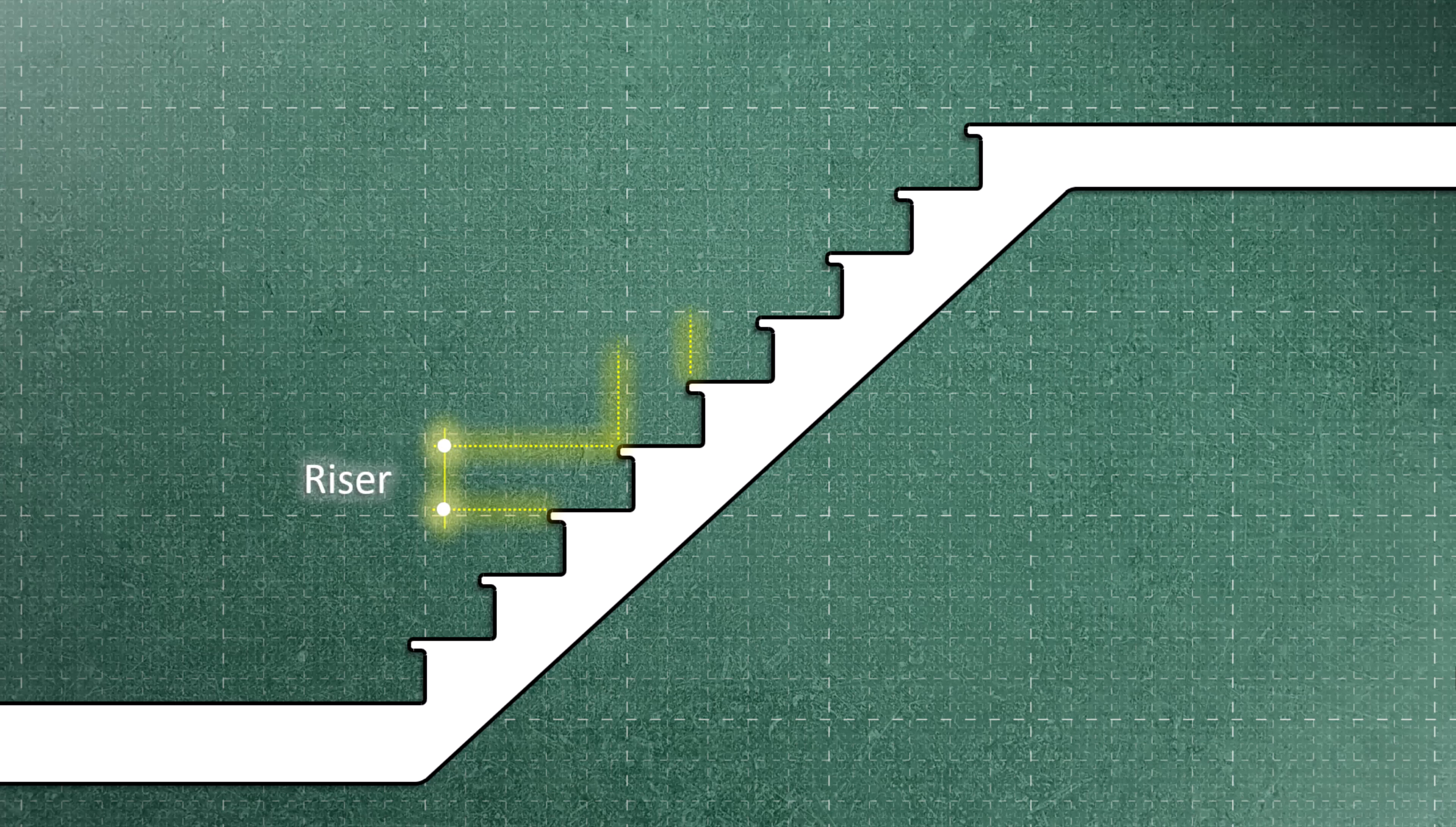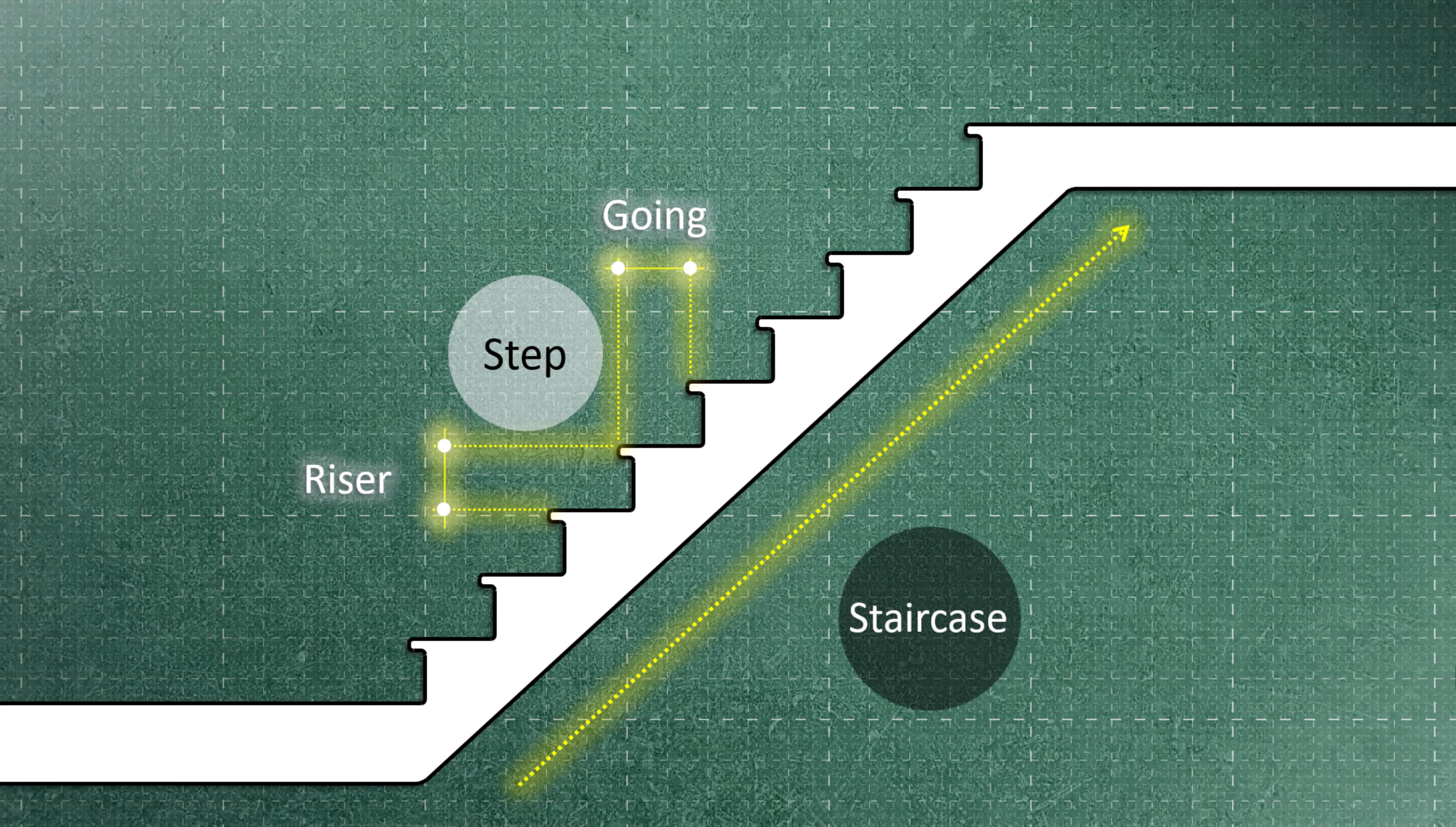The vertical part of a step is known as the riser, while the horizontal part is called the going. When you combine the riser and going, you get a step. Multiple steps in a sequence create a staircase. After the last step, it is better to design a landing. It's important to plan for the landing before triggering the stairs.